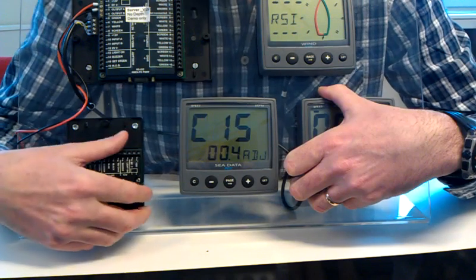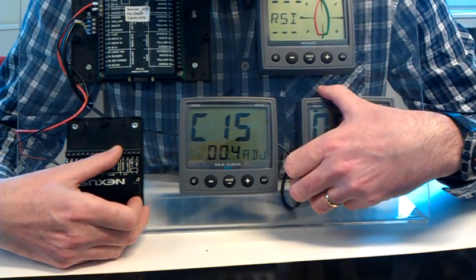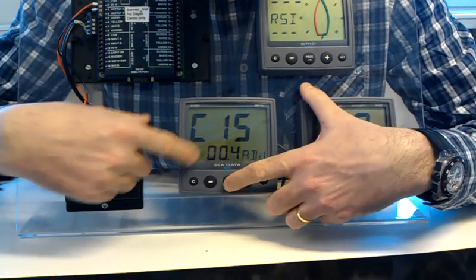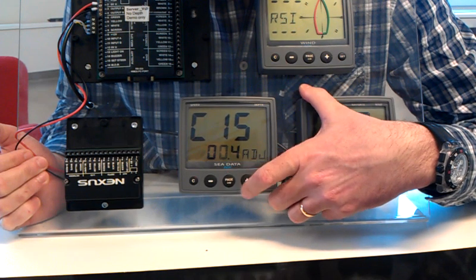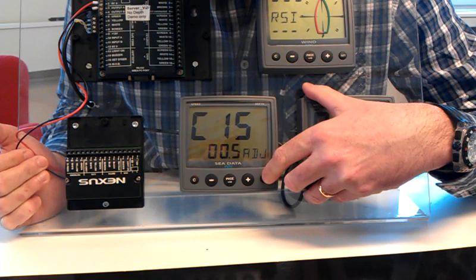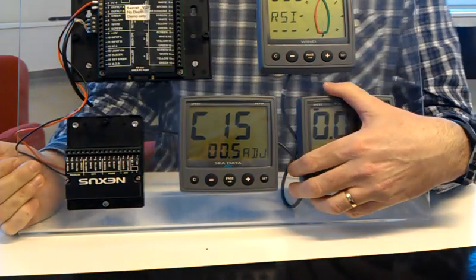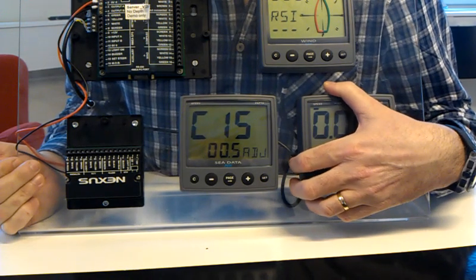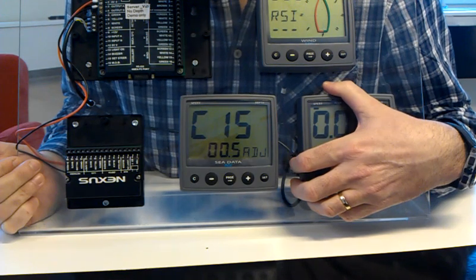However, my boat, the Good Ship Nexus, the transducer is actually 50 centimeters below the water line, so I need to alter that. So what I need to do is select the 4 with page, and change it to a 5, and confirm with set. So now we've set the transducer to a reading from the water line for where a boat has the transducer 50 centimeters below the water line.